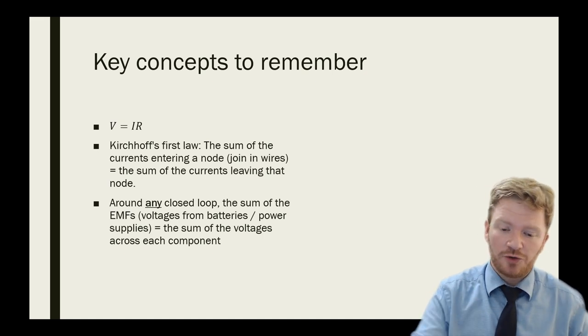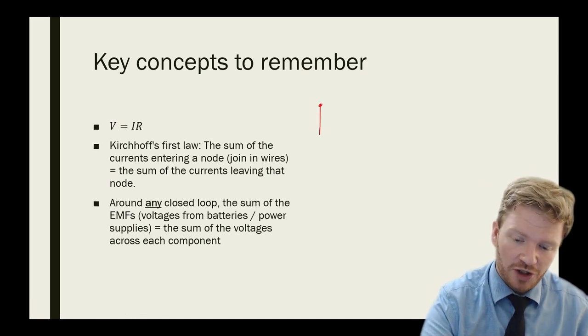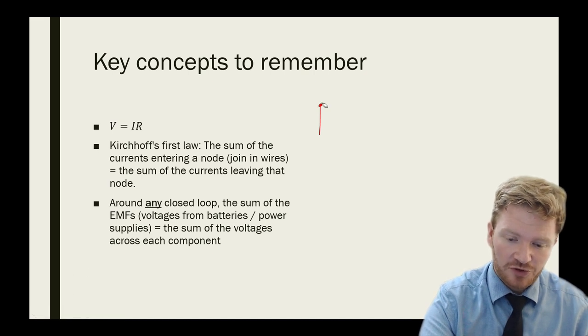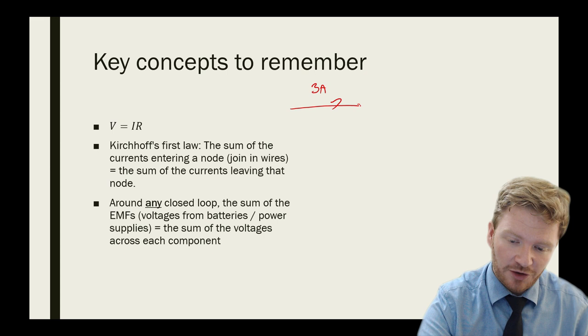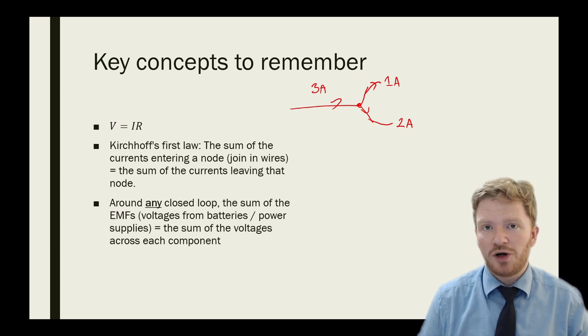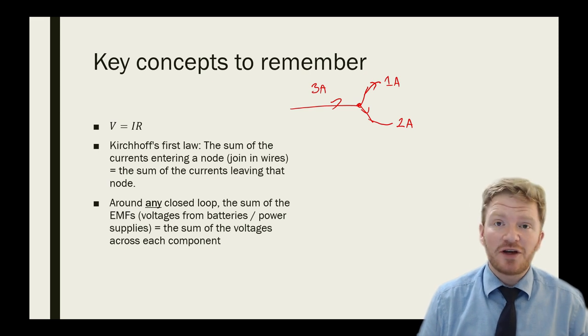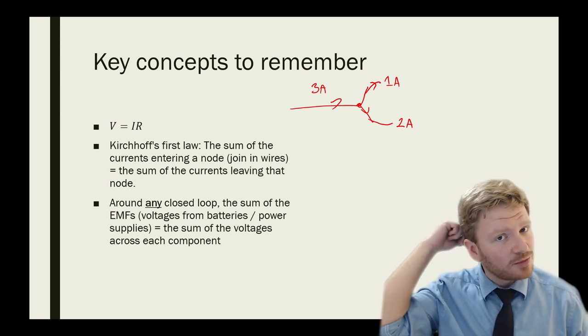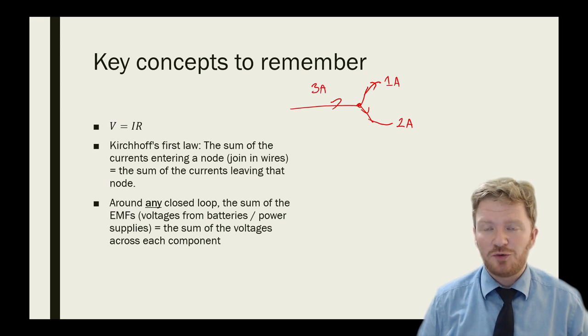The second one we need to know is Kirchhoff's first law. Kirchhoff's first law tells us what happens to current at a junction. If I have a wire coming along here with three amps running through it, and my electrons can choose to go down two different wires, then the total of the currents through those following wires must equal the total current going in. Similarly, if there are no nodes, no joins in my circuit, the current is the same everywhere along it.